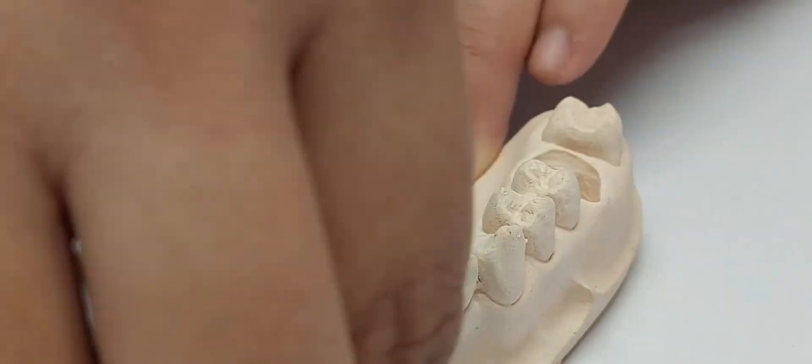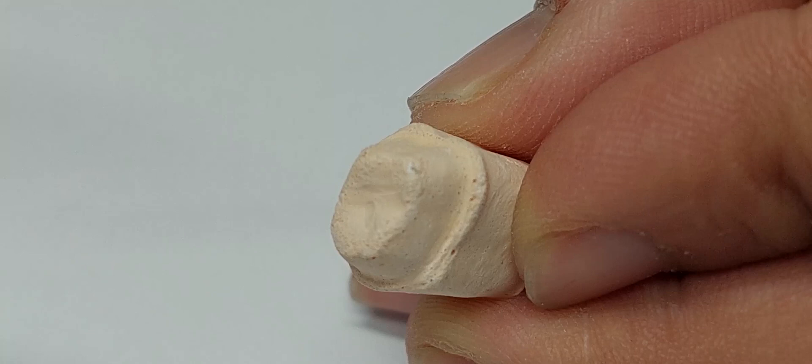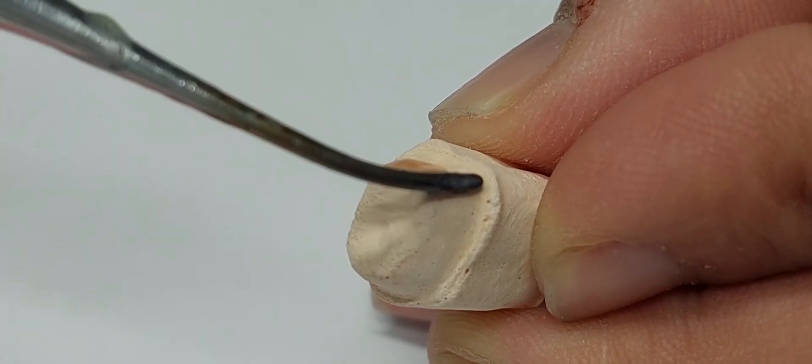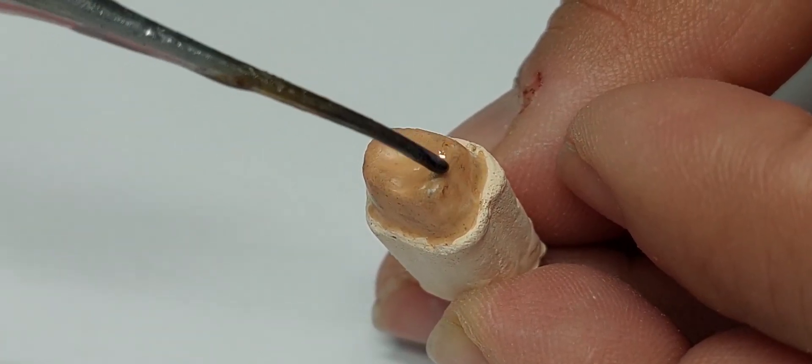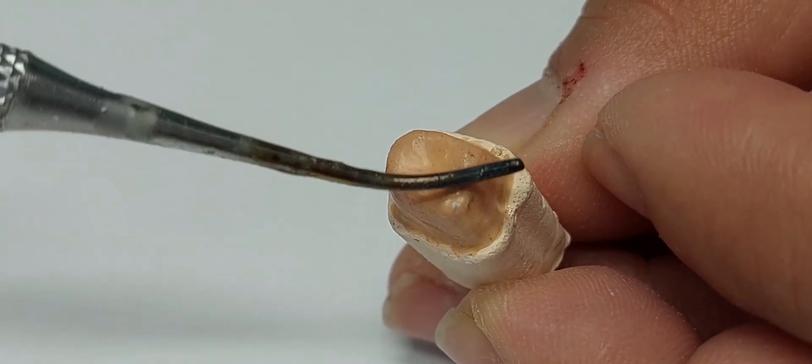We need to individualize our models to have success in our lithium disilicate restorations. Use pink wax to do the block out. Just a thin layer will help us remove retentions.